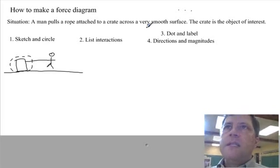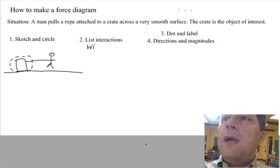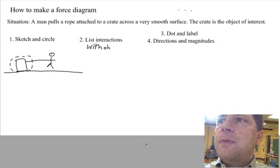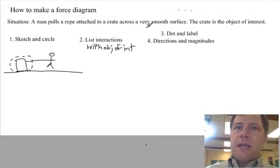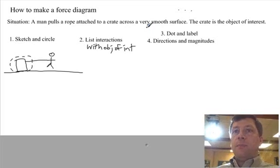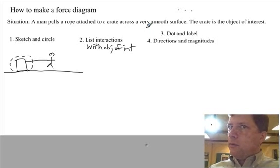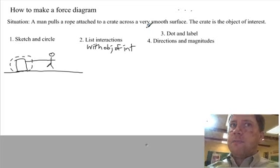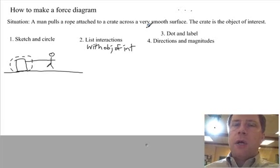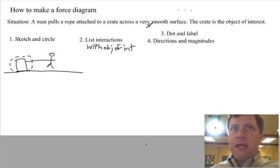Now, I want you to list interactions with the object of interest, please. What's an interaction? An interaction is a push or a pull. And with only one exception, something has to be touching the object of interest to push or pull on it. So let's go through everything that's touching the object of interest.